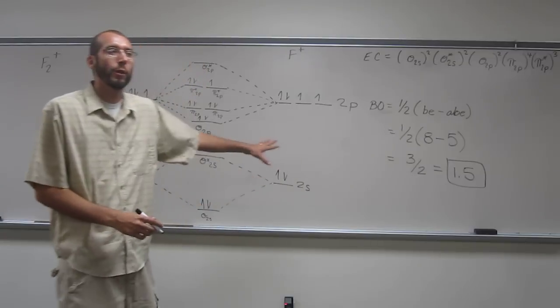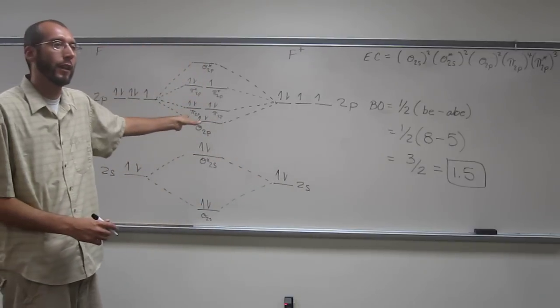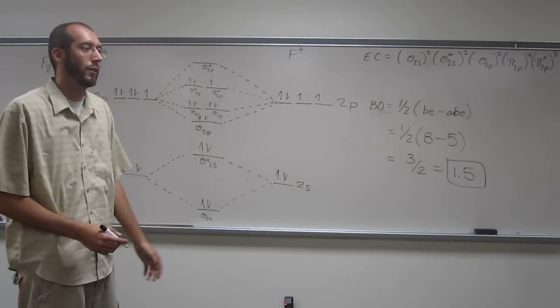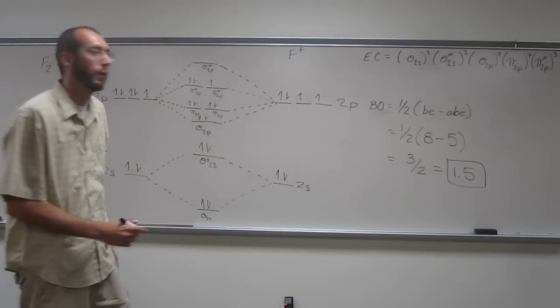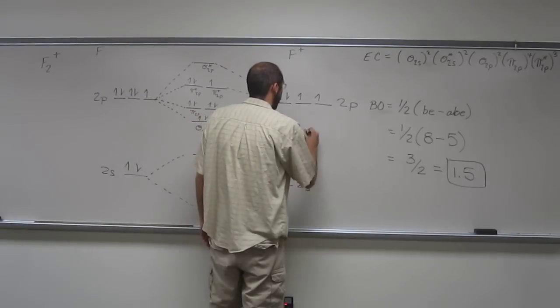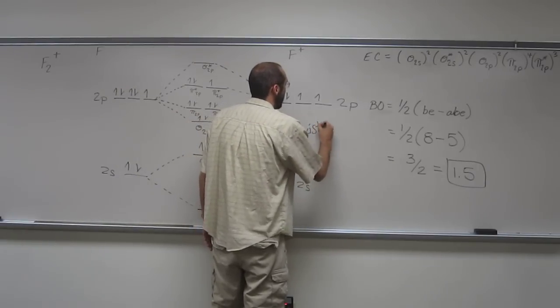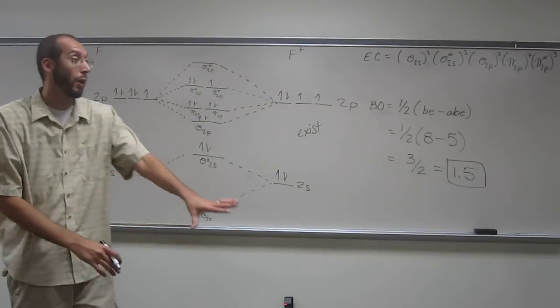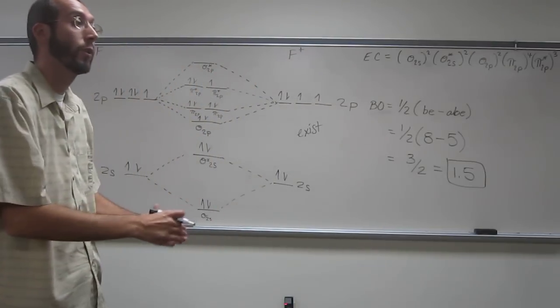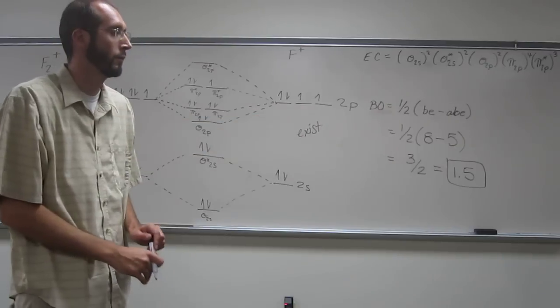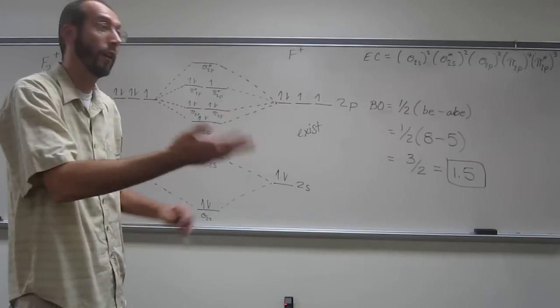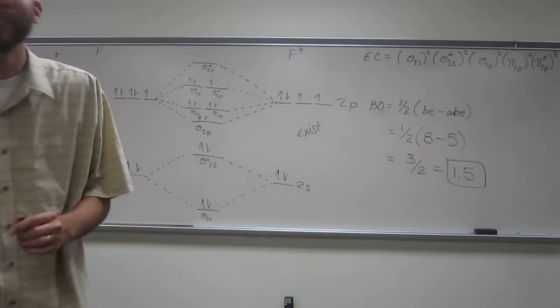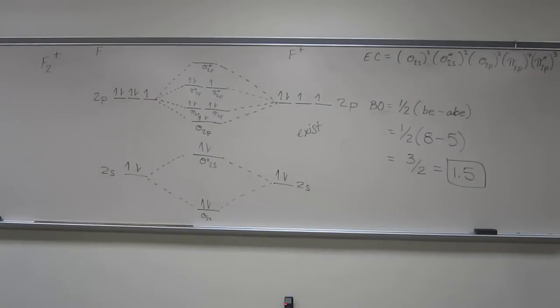So I guess we've already answered that question, but I guess the next question would be does this molecule exist or would this ion exist? Yeah, it would exist. Why? Because it's above zero. Even a bond order of a half exists, but it's a very weak bond. But stronger than no bond, right? Is everybody OK with that one? I think we captured lightning in a bottle there.